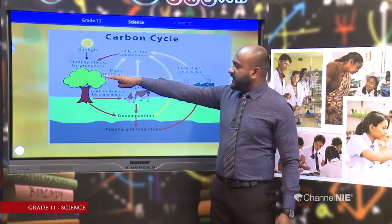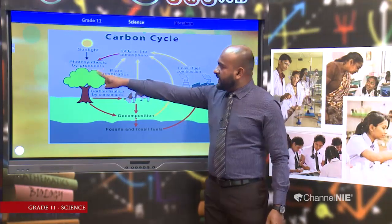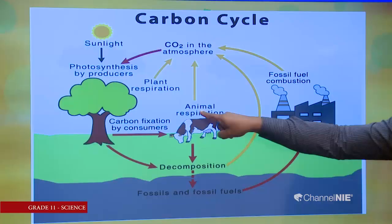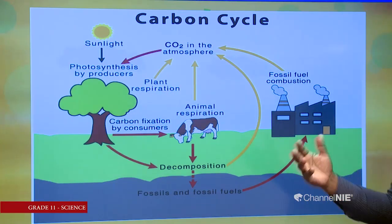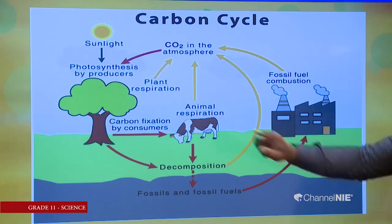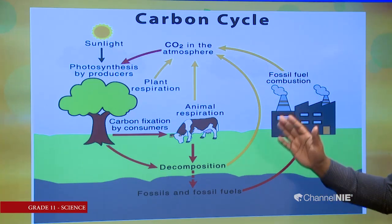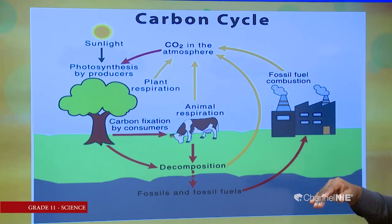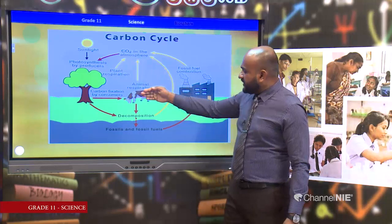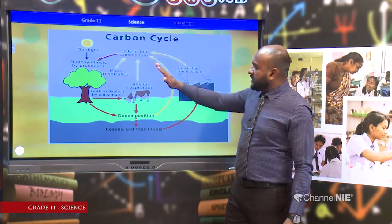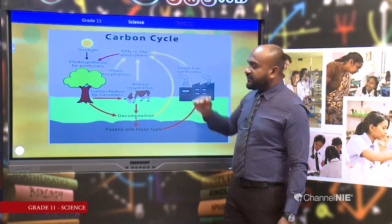Animals eat these plants — herbivores will directly eat plants or plant products, and then this carbon goes to the body of animals. Meanwhile, carnivores and top carnivores eat these animals, so carbon goes to the body of those animals also. These plants and animals all respire, and this respiration adds carbon dioxide back to the environment.